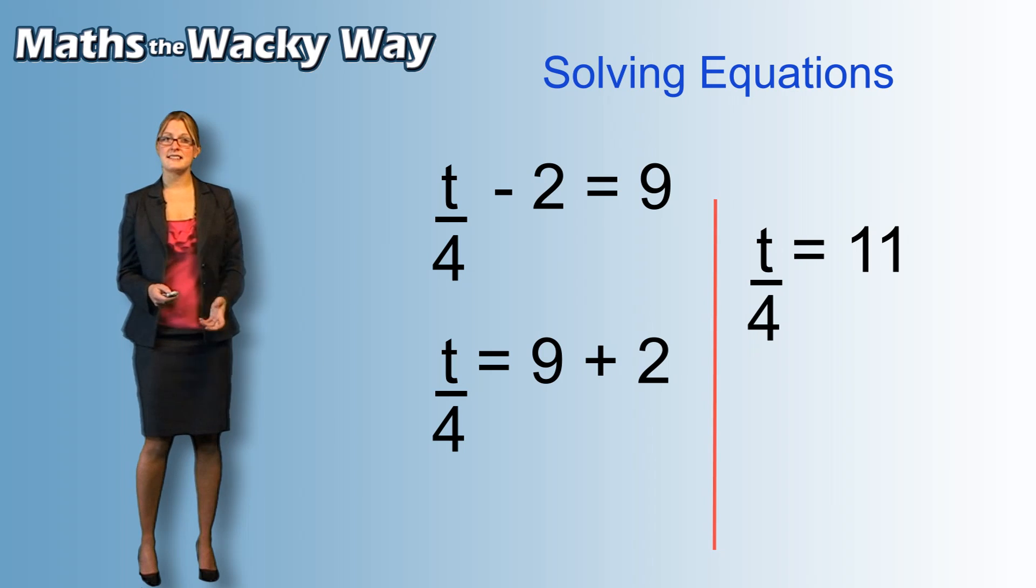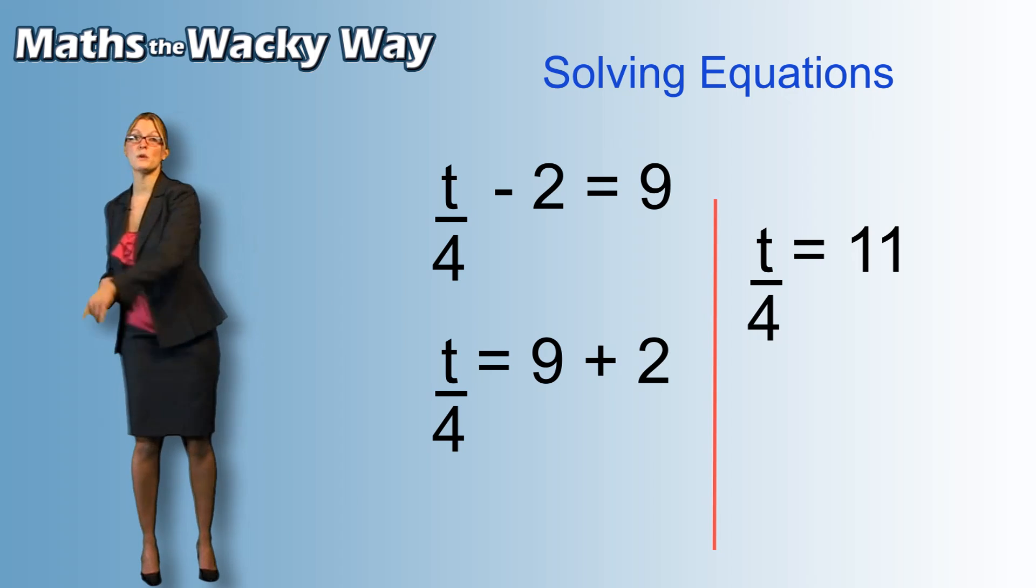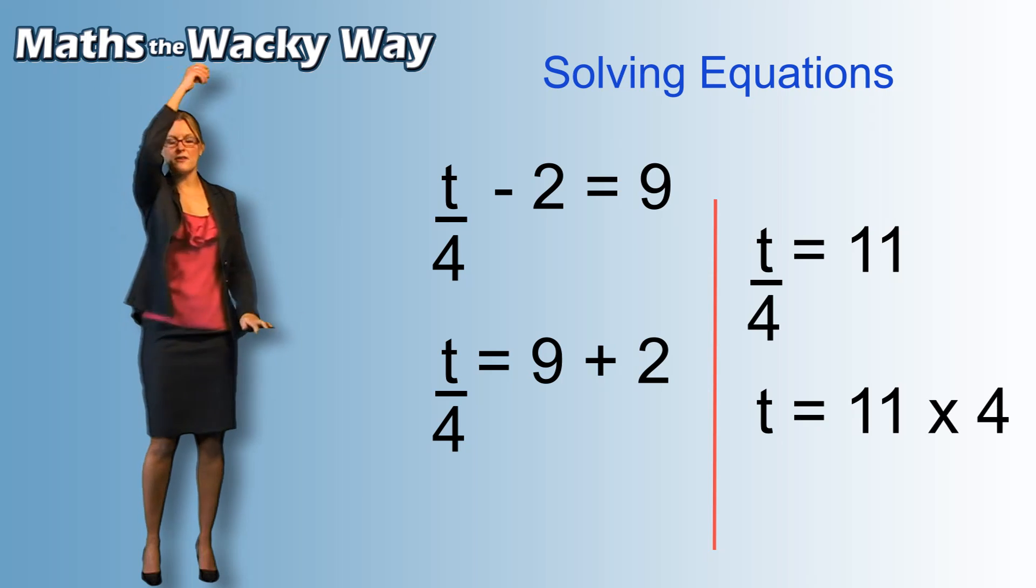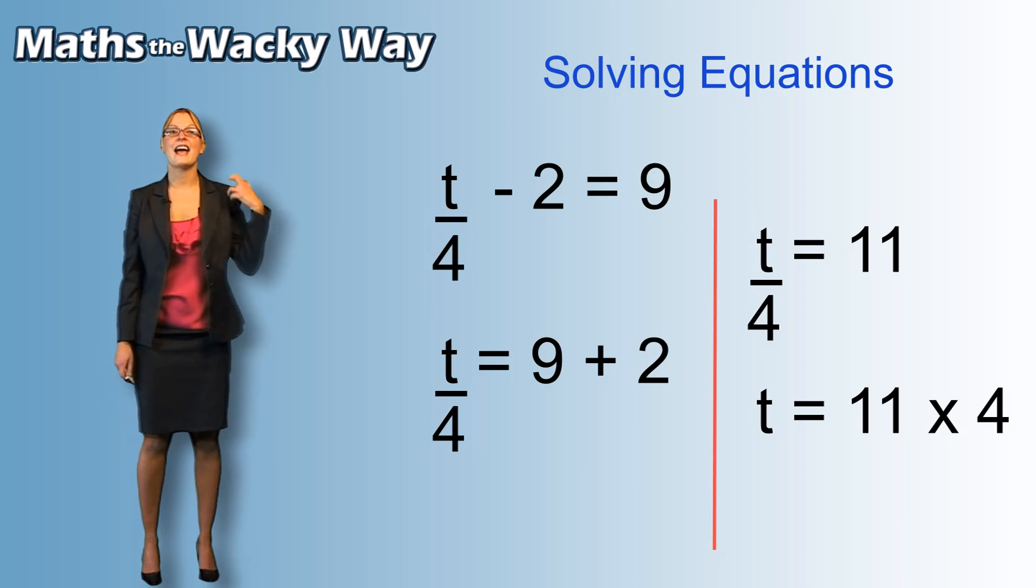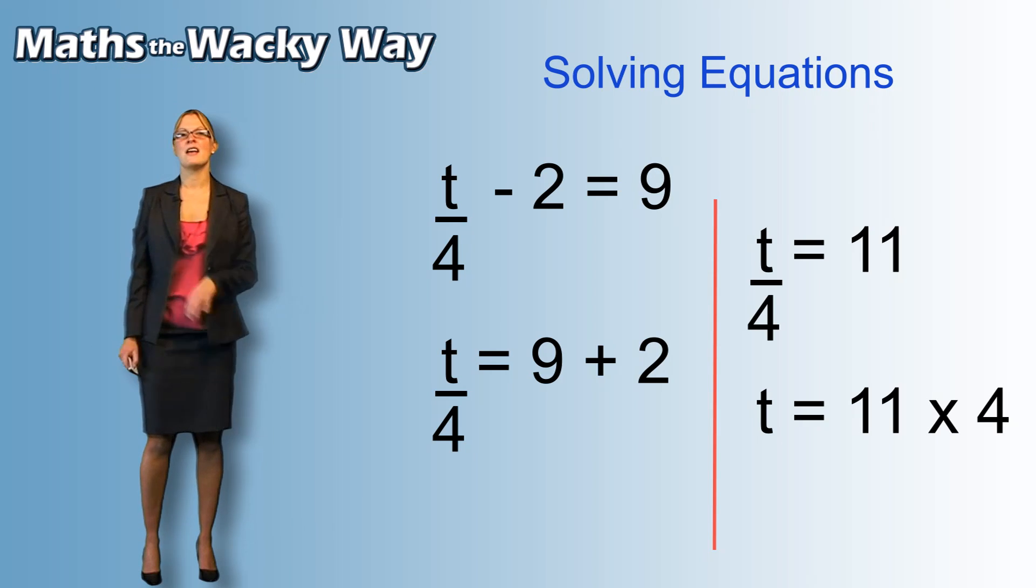Now in order to get t on its own, the only thing we can now move is the 4 which is dividing. The 4 is going to go up to the other side, high five by the man in the equal sign and he will become a multiplication. So, we end up with t equals 11 times 4 and that of course gives us 44.